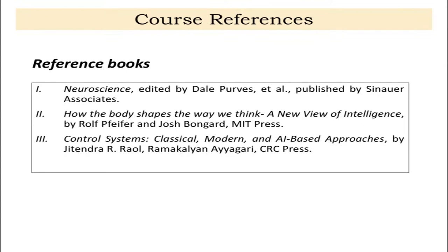I have talked about some reference books which will be useful now — particularly the first and the third book: the neuroscience book edited by Dale Purves, and the control systems — classical, modern and AI-based approaches. These are important at this stage, so you can refer to these books and also try to get reference materials related to the lecture.